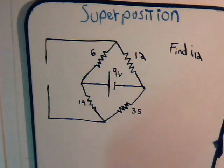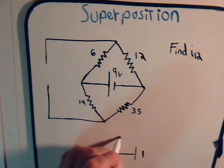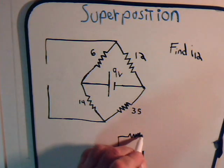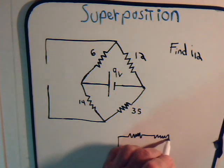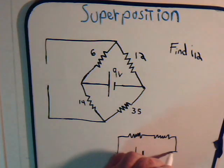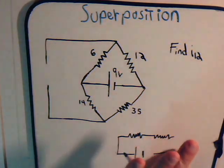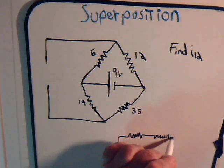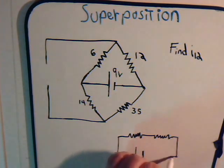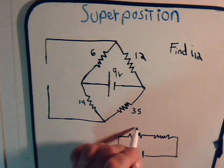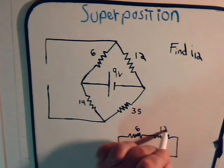So the way this setup is, we could kind of redraw it if we wanted to. We have our voltage source. Then we have a 6 ohm and a 12 ohm in series. And then here we also have the 14 and the 35.